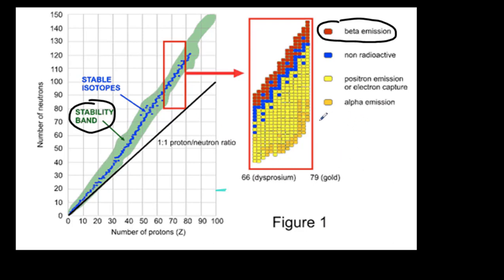So if you think about what a beta emission is, that's when a neutron changes to a proton inside the nucleus. So what's going to happen there, if you have an isotope right here, and a neutron changes into a proton, then the number of neutrons is going to go down, and the number of protons is going to go up. So basically, you're moving towards that stability line. In other words, to become more stable, fewer neutrons are needed, and more protons are needed.